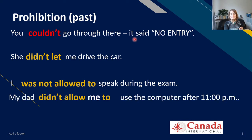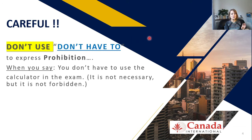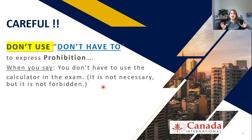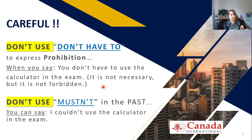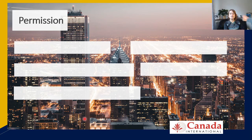Be careful — don't use 'don't have to' to express prohibition. When you say 'you don't have to use a calculator in the exam,' it means it's not necessary but not forbidden. If you want to emphasize that it's forbidden, say 'you mustn't use a calculator.' Also, don't use mustn't in the past — mustn't is for the present. To express something in the past, you would say 'I couldn't use a calculator in the exam.'